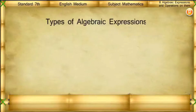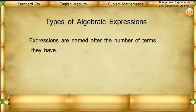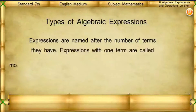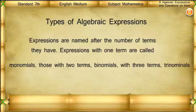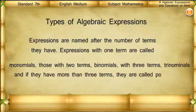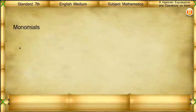Types of algebraic expressions: Expressions are named after the number of terms they have. Expressions with one term are called monomials. Those with two terms are called binomials. With three terms, trinomials. More than three terms, polynomials. Examples of monomials: 4X, 5/6 M, minus 7Y.